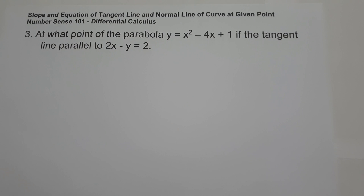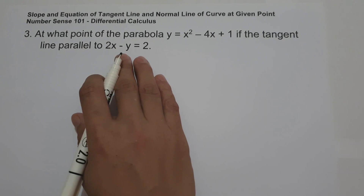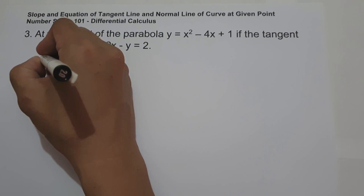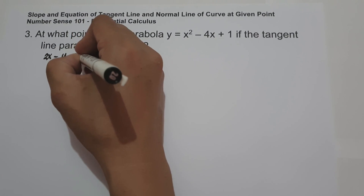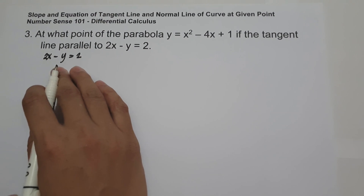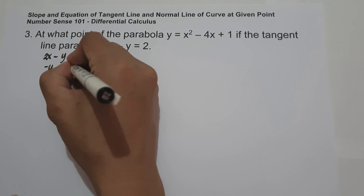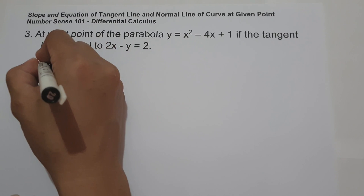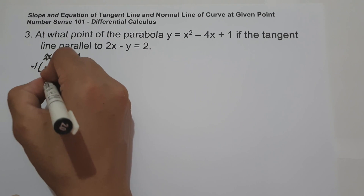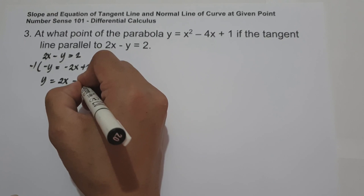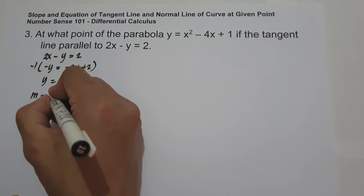On example number 3, at what point of the parabola y equals x squared minus 4x plus 1 is the tangent line parallel to 2x minus y equals 2? First, we find the slope of the tangent line from the given line. Writing it in slope-intercept form: y equals 2x minus 2, so the slope of the tangent line is positive 2.